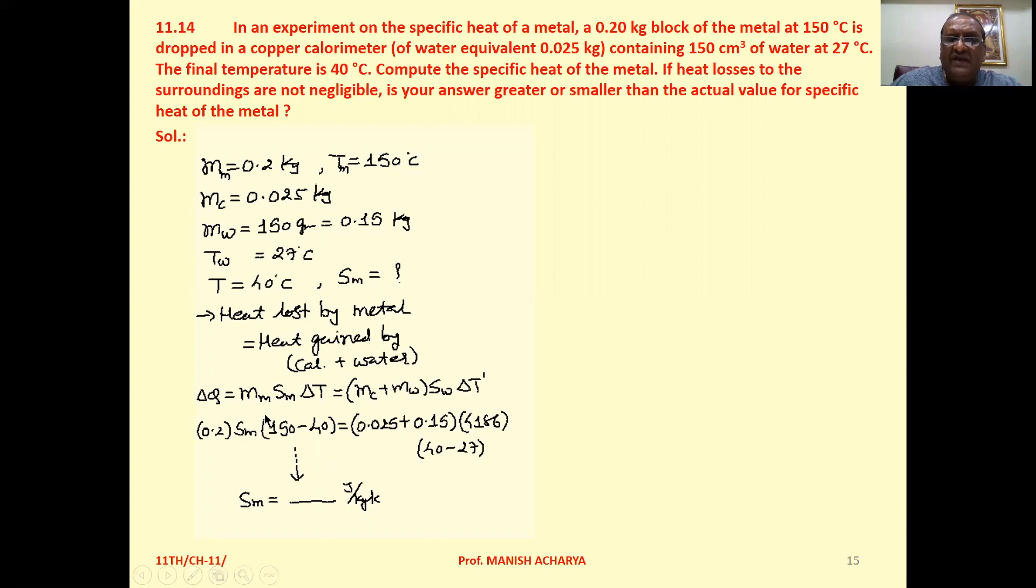So first of all we can calculate heat lost by metal which is equal to heat gained by calorimeter and water. So delta Q, that is mass of metal, specific heat of metal, delta T. Okay. The same one is absorbed by or gained by calorimeter plus water. So mass of calorimeter plus mass of water, specific heat of water, into delta T dash.